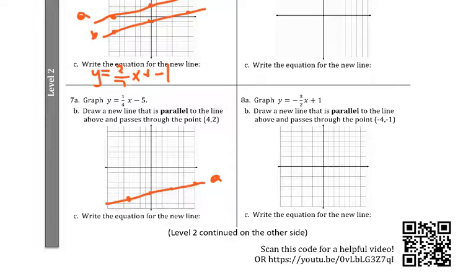Then, we want to draw a line parallel to that line. That goes through the point 4, 2. So, the point 4, 2 is right here. This is tricky to do with my stylus. And we also just want to go up 1 over 4. Or, down 1 back 4, down 1 back 4, down 1 back 4. And, there's our line right there.